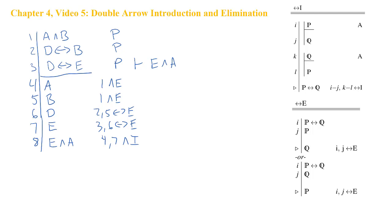Pretty straightforward. It's just like arrow elimination, only because you've got a double arrow, you can do it in either direction. You still need two pieces. You need the double arrow statement, and then one or the other side will allow you to move across the double arrow.